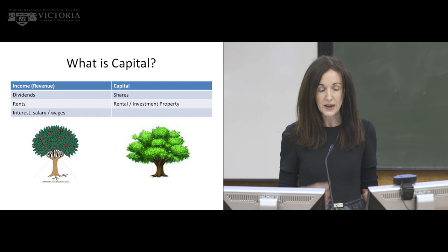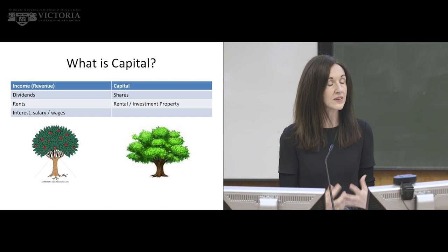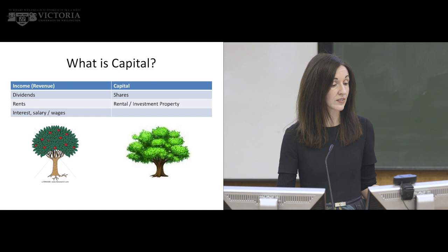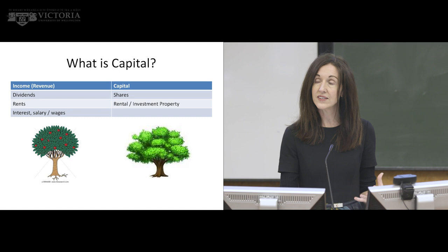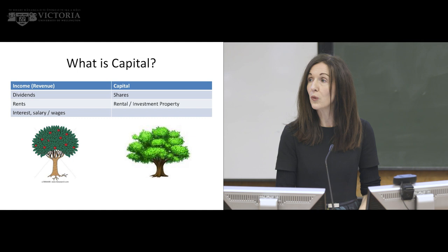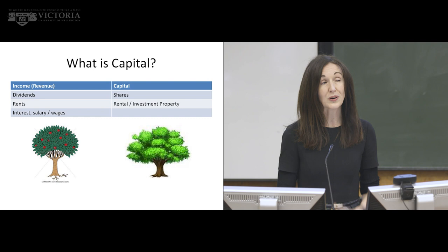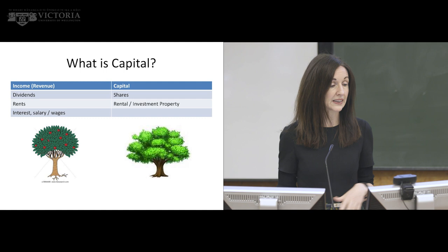From a tax perspective, you can think of the capital component as being the tree and the income component as being the fruit on the tree. In New Zealand, we tax the fruit — we tax the income — but we don't comprehensively tax that asset. That asset, in this case the tree, is when the taxable transaction would occur when that item is sold. We call it the capital-revenue distinction, but capital versus income is possibly a clearer way of looking at it.